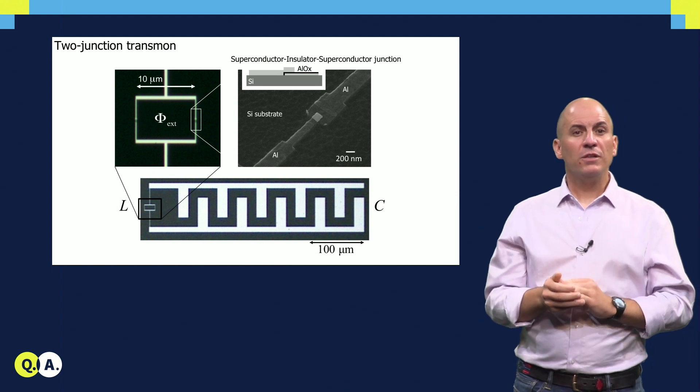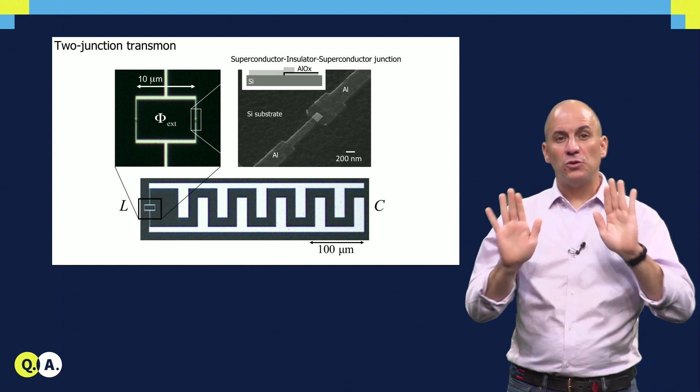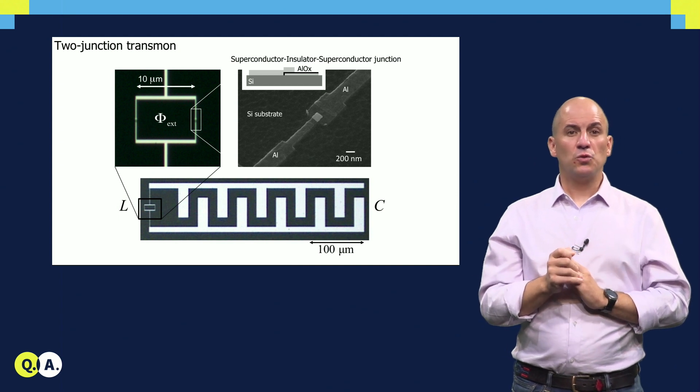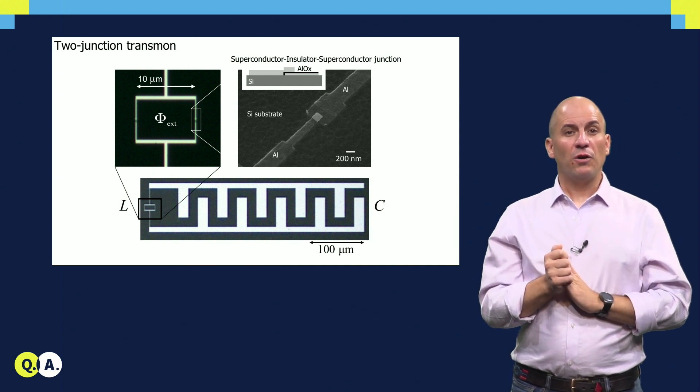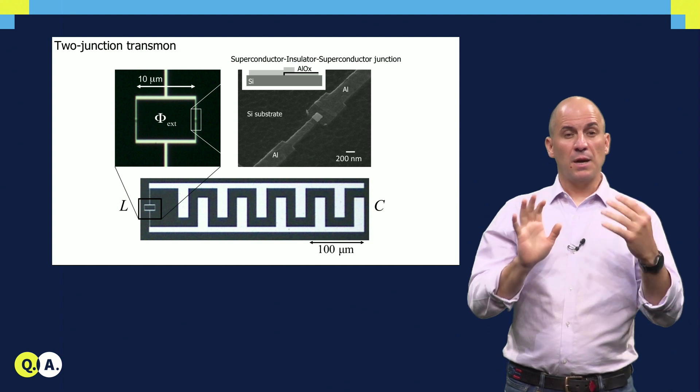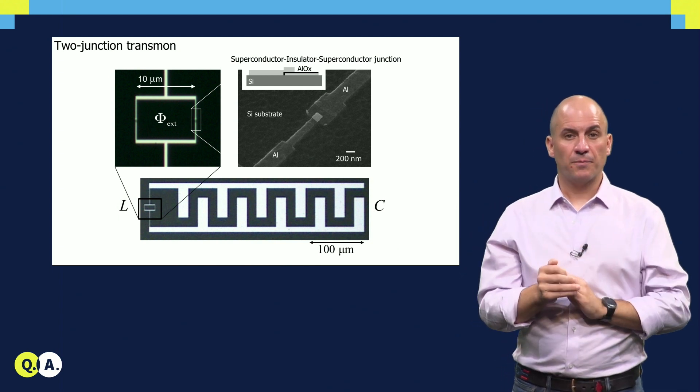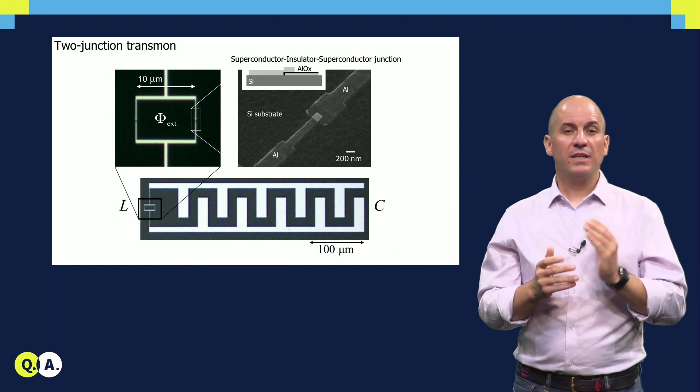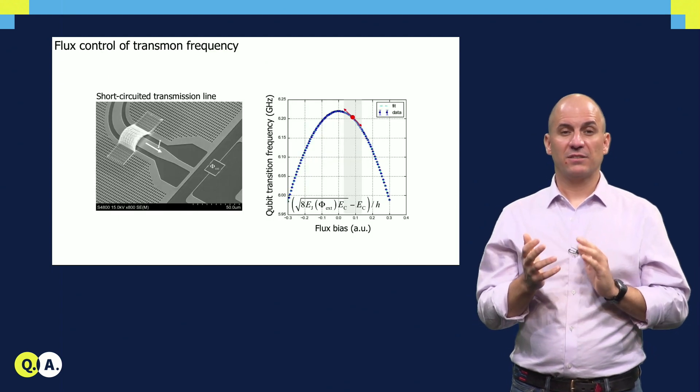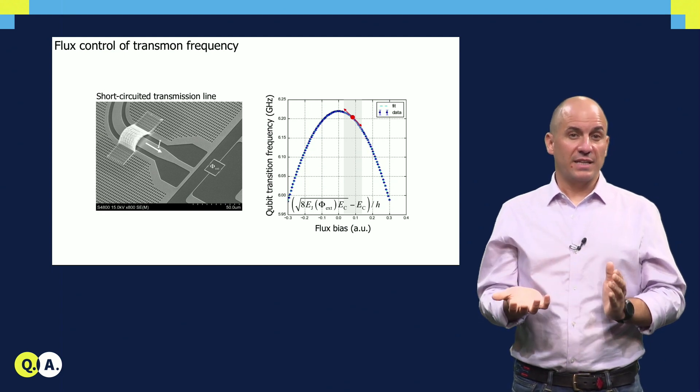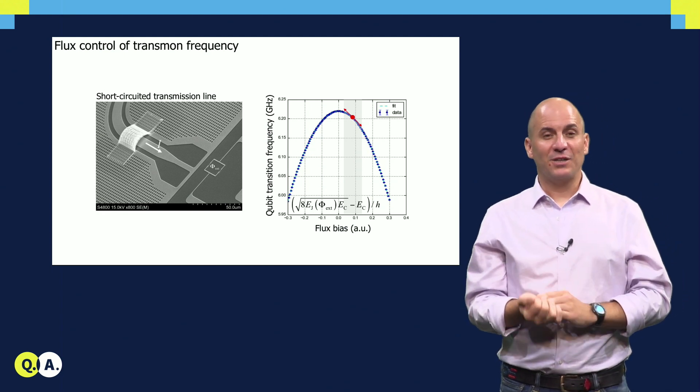As a final note, we build our transmon not from one, but two Josephson junctions in parallel. This gives us the possibility to tune the inductive element, and thereby also the qubit transition frequency, by threading a magnetic flux through the loop defined by the two junctions. We can do this independently for each qubit, and on nanosecond timescales. This capability is the workhorse enabling two qubit gates. Adrian will present this in a later video.